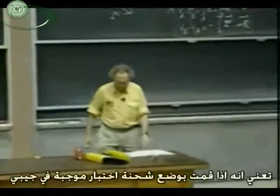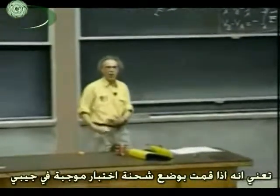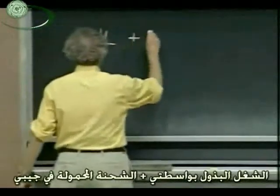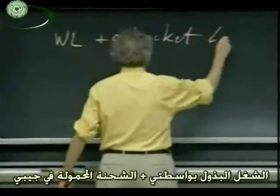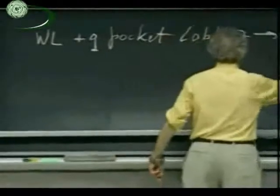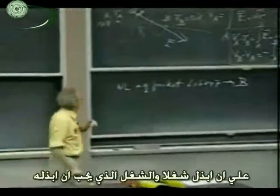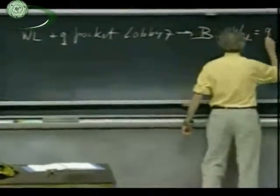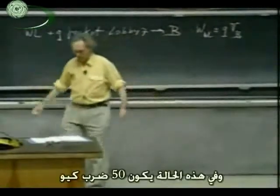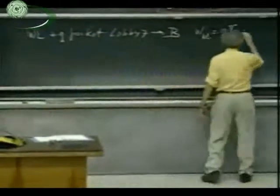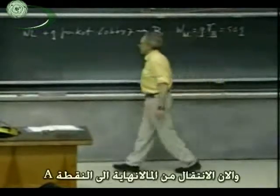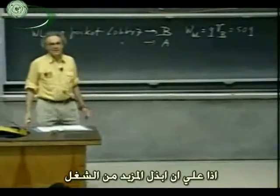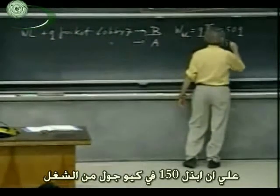What does it mean? It means that if I put a plus Q charge in my pocket and I come all the way from lobby seven and walk up to point B, I have to do work. The work I have to do is the product of my charge Q with the potential — that is Q times VB. So in this case it's 50Q joules. Now I go from lobby seven to point A. I have to do more work — 150Q joules of work.